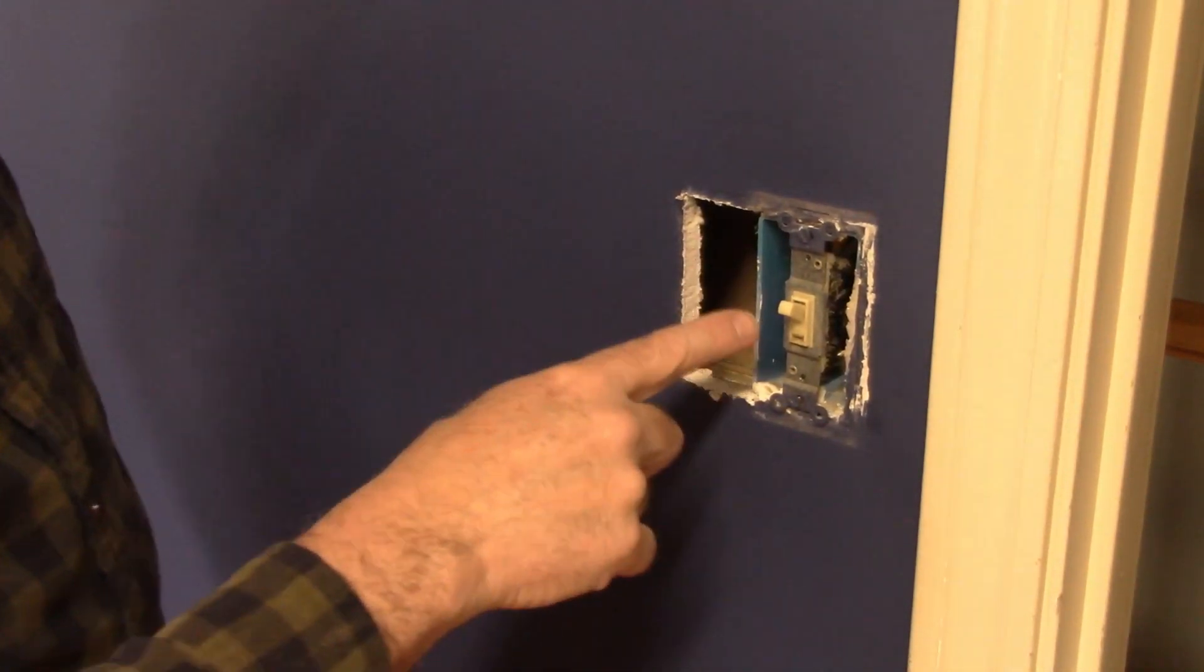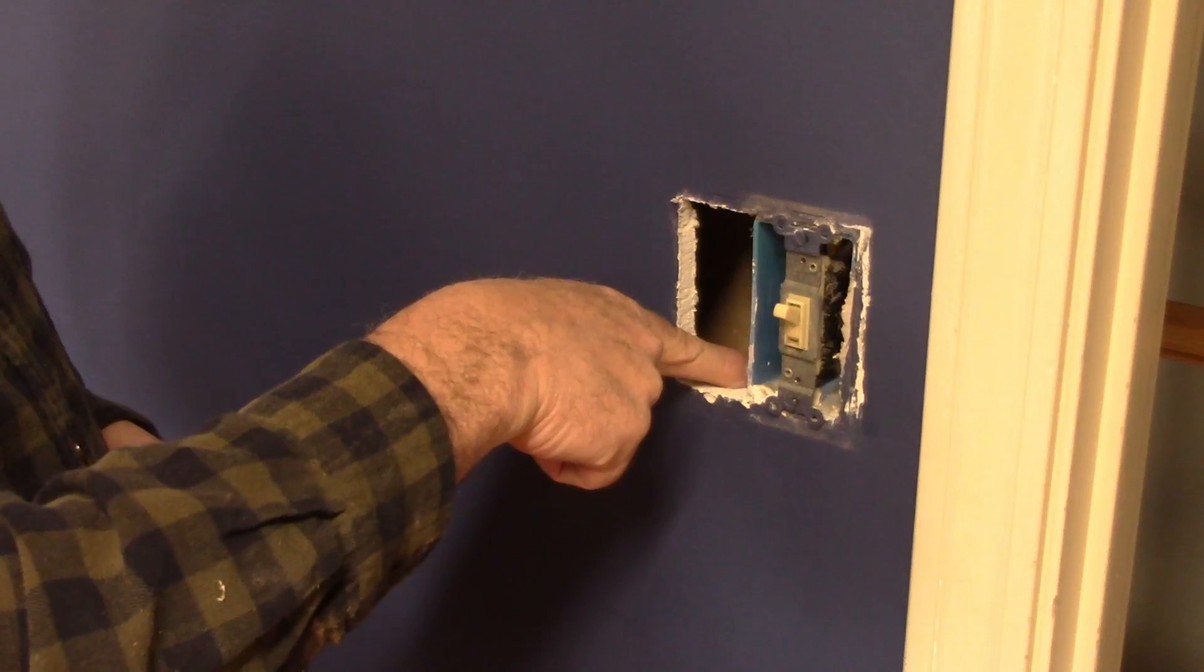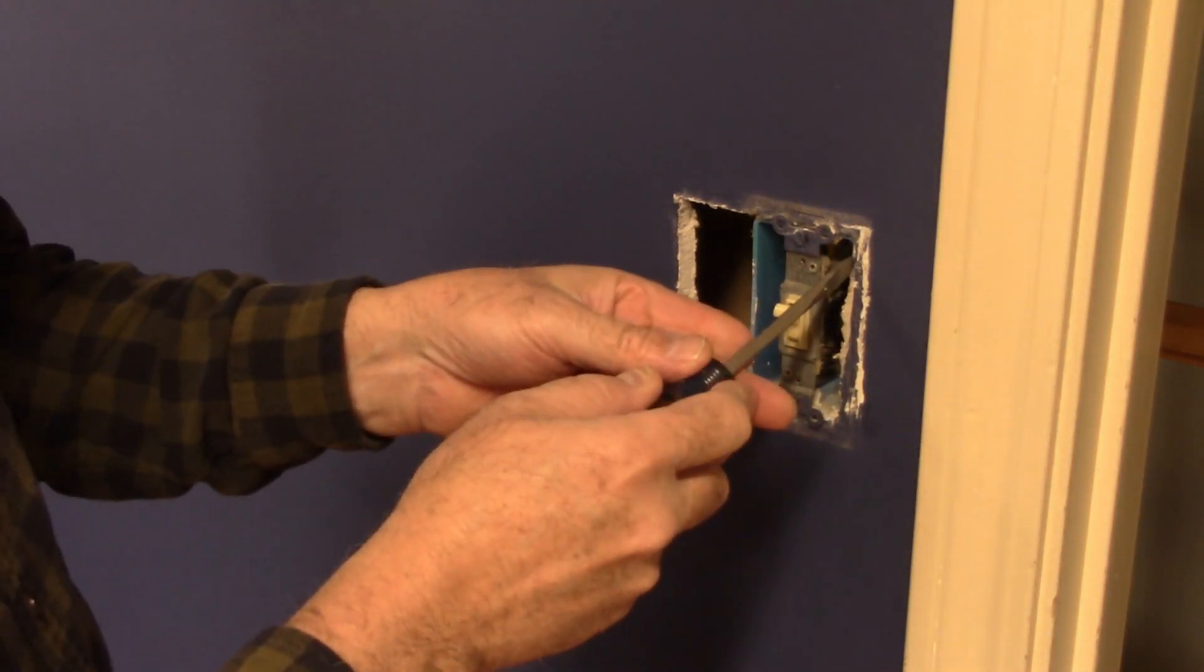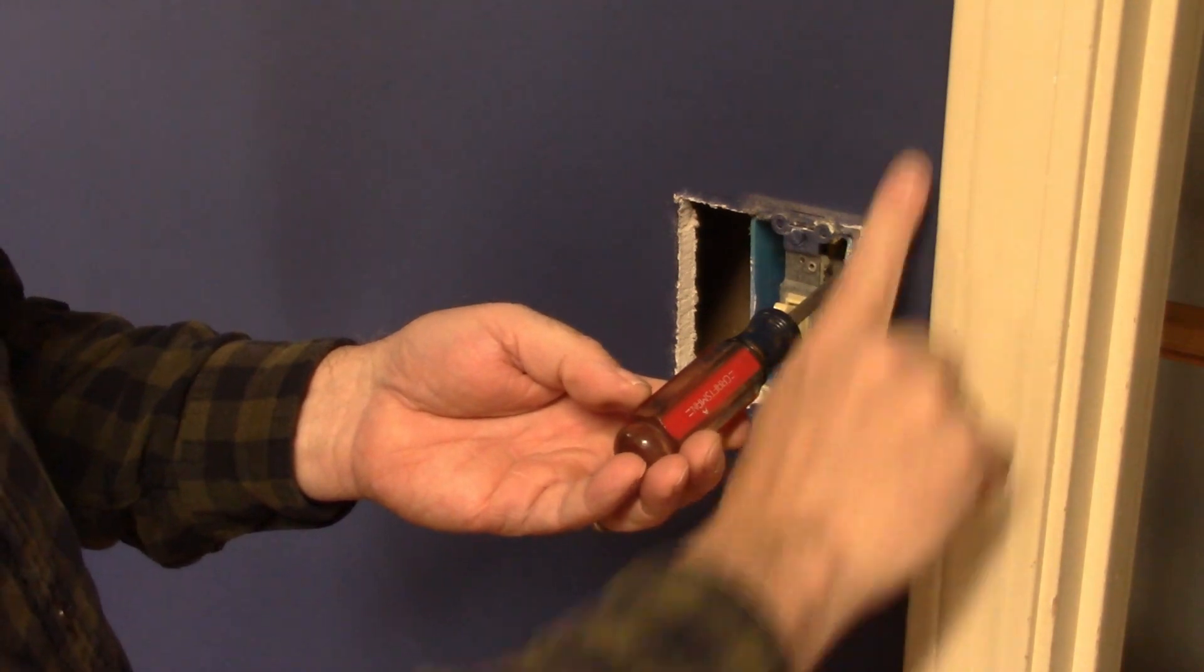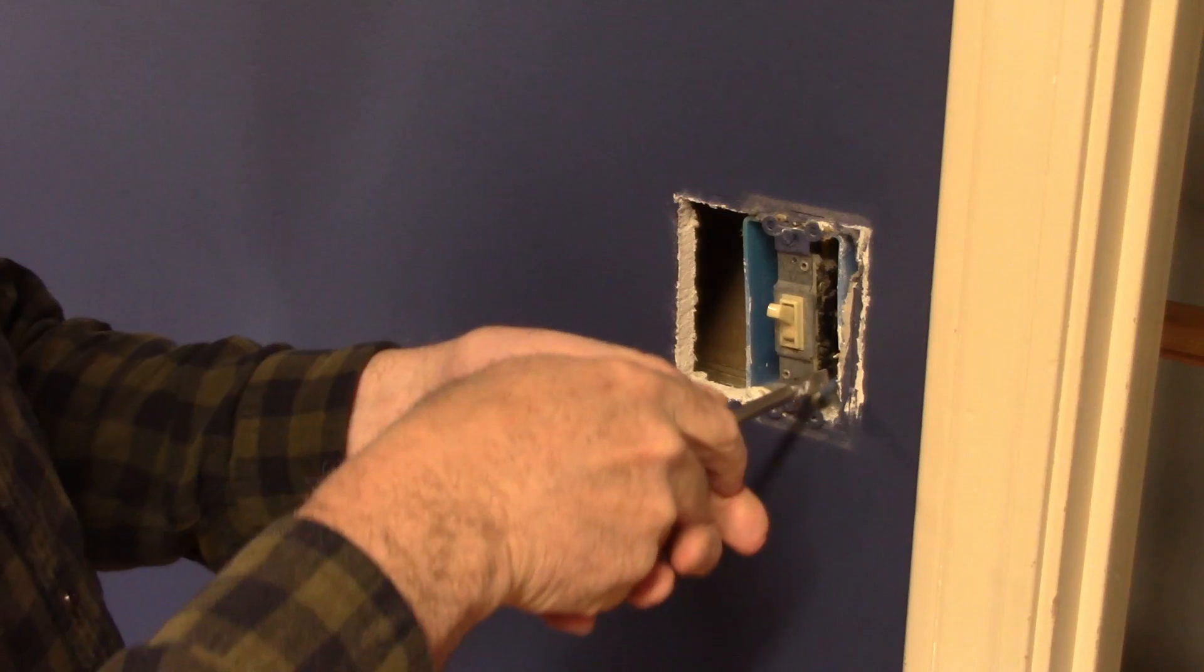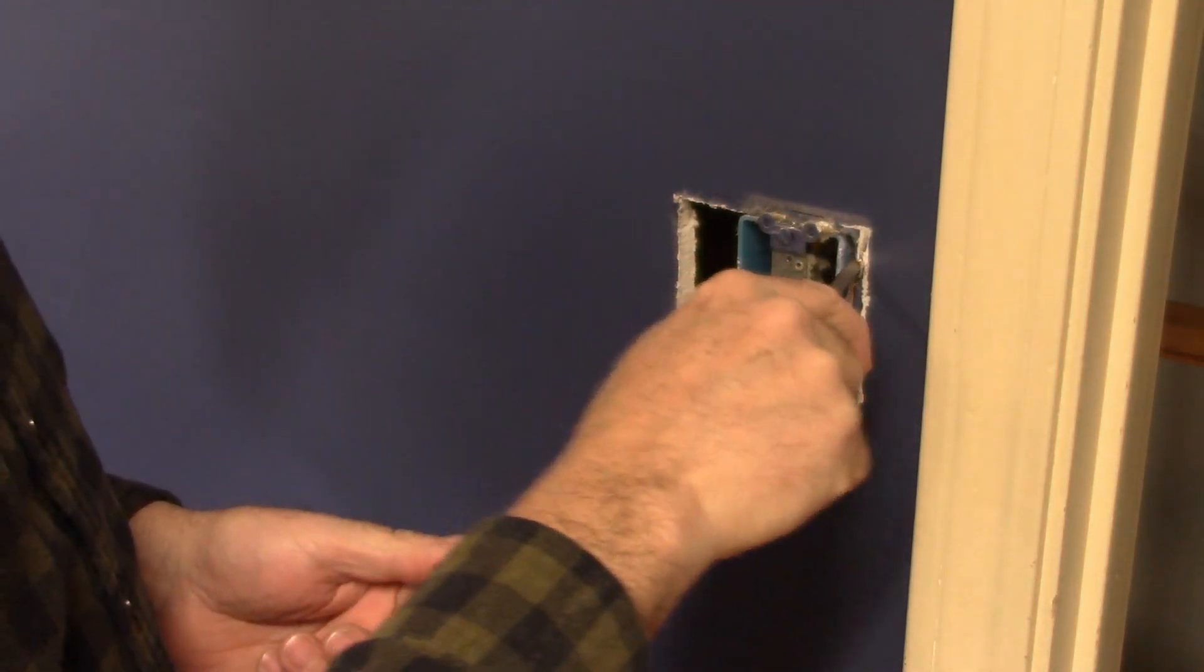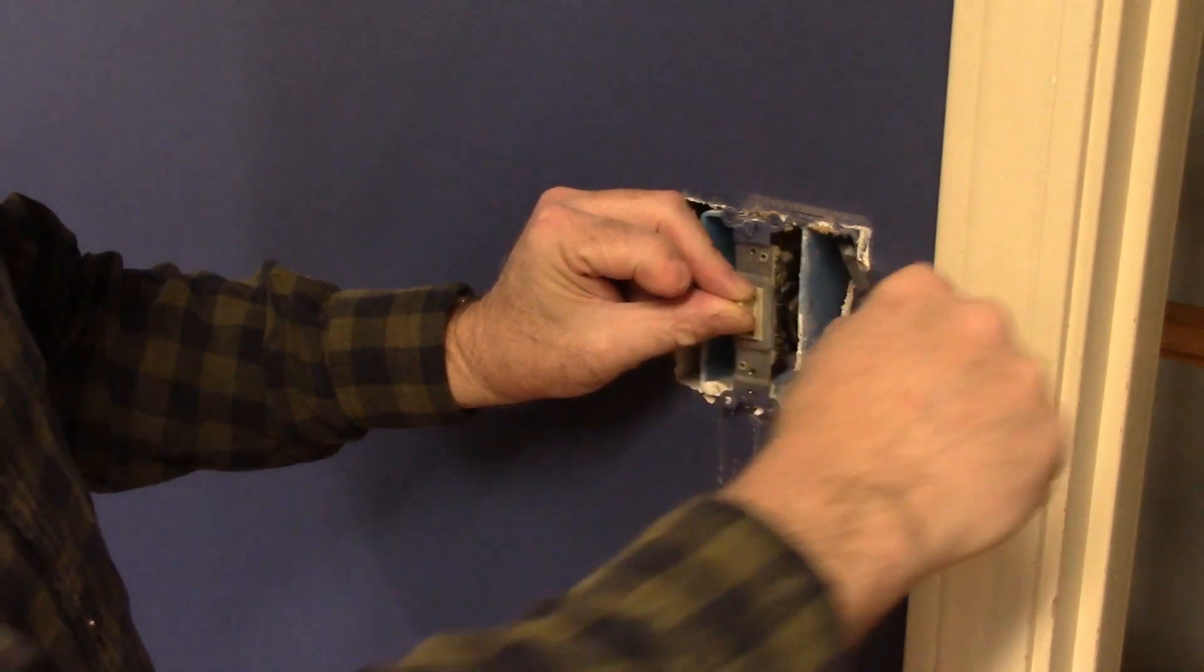All right, now the tricky part is getting this out. Now there's usually two nails that are driven in and I can see the nails sitting right here. There's kind of two ways to do this. You can stick a screwdriver in here, get behind that. There's a two by four right here behind this sheetrock. And then you can pry that out. Just like that.